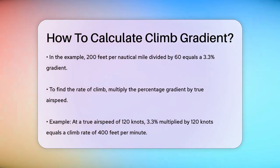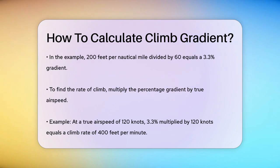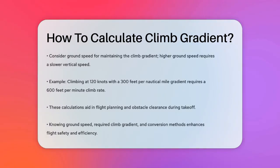Another way to look at it is by considering your ground speed. The faster your ground speed, the slower your vertical speed needs to be to maintain the same climb gradient. For instance, if you're climbing at 120 knots and need a 300 feet per nautical mile gradient, you'll need to achieve a 600 feet per minute climb rate.